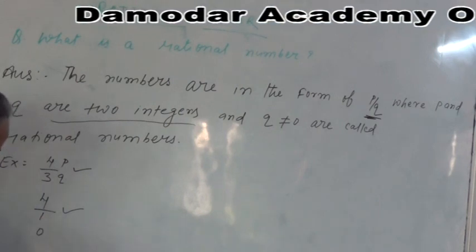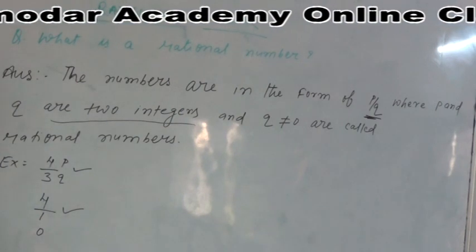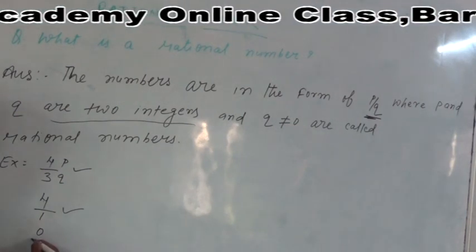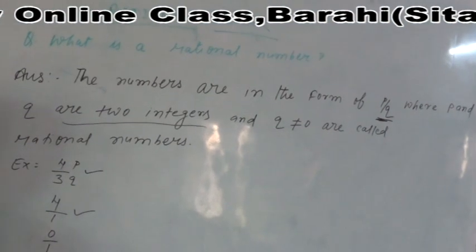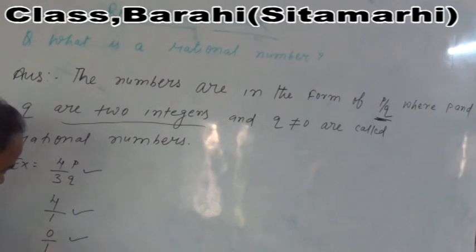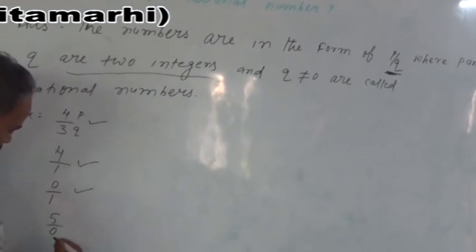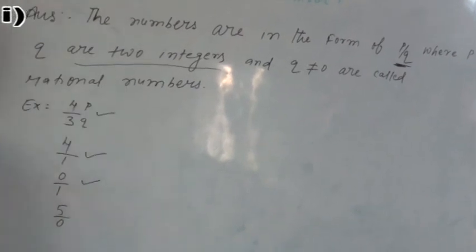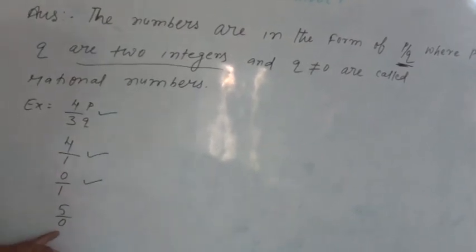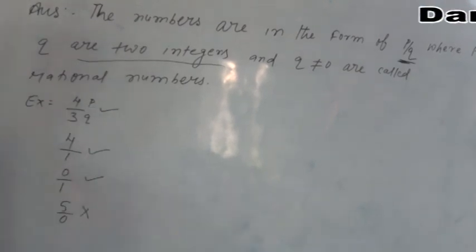And 0, we can also write 0 in the form of 0/1, so it is also a rational number. But how will you say about 5/0? 5/0 is not a rational number because Q is 0, so it is not a rational number.